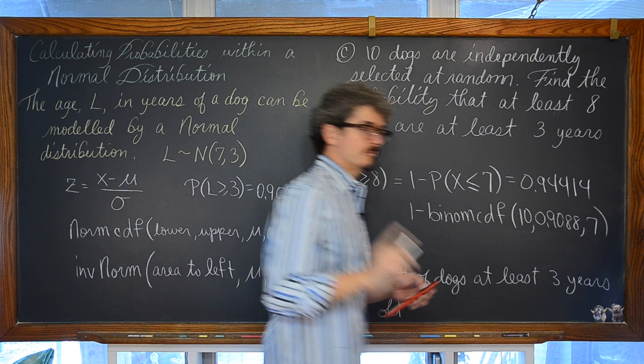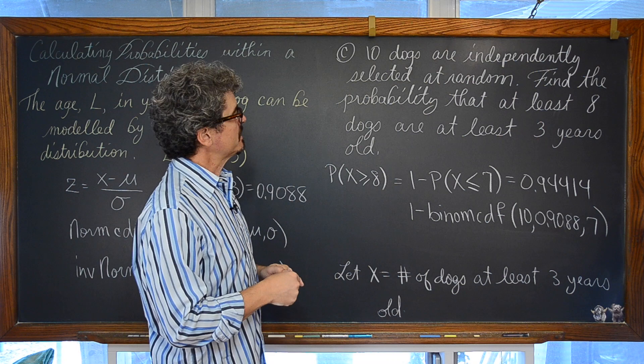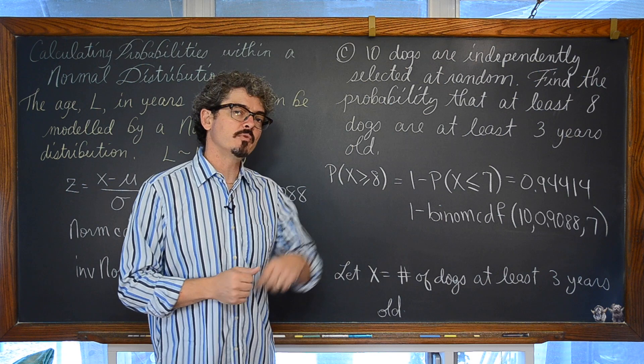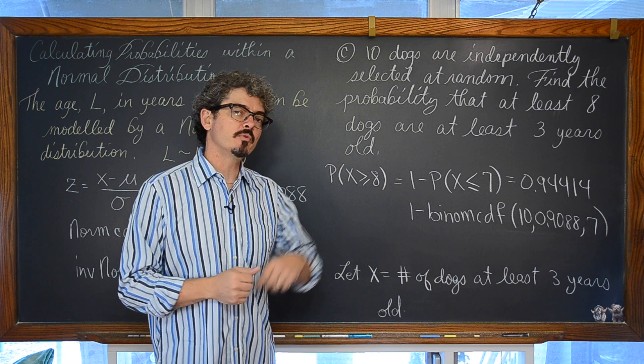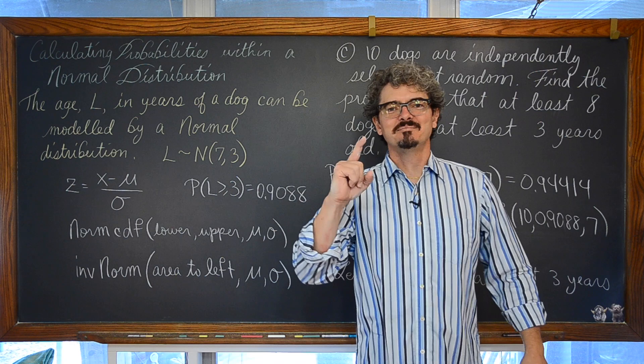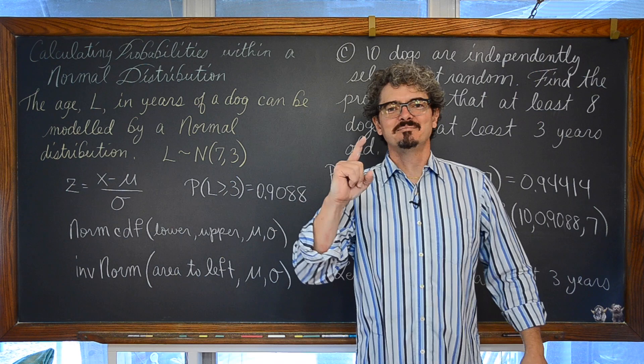So from this population with a mean age of 7 and standard deviation of 3, if you choose ten dogs randomly, the probability that at least eight of those dogs are at least three years old — recognizing this as a binomial setting problem — is approximately 0.944 or 94.4%. I am Mr. Tarrou. BAM! Go do your homework!